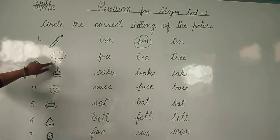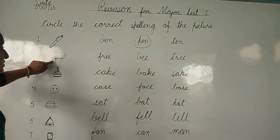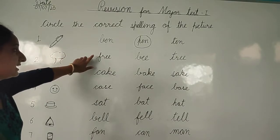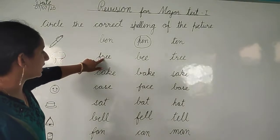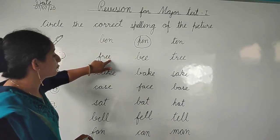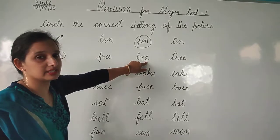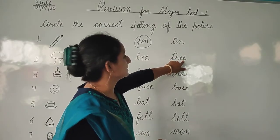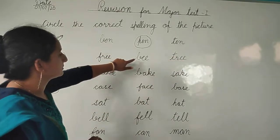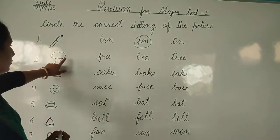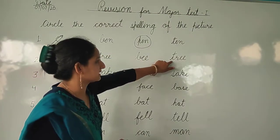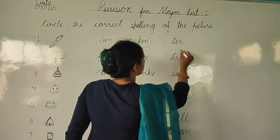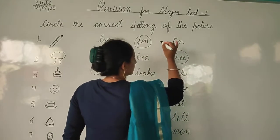Next — what is this? Identify this picture. This is a tree. And now we will read the words. What is the spelling of tree? Yes, here — T-R-E-E-T — this is the spelling of tree. So we will make a circle here.